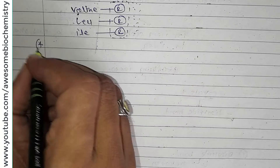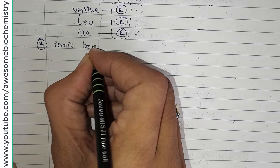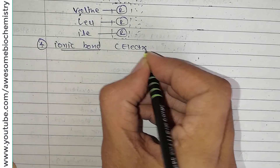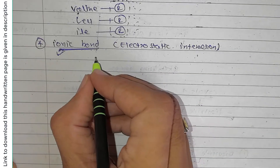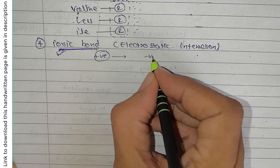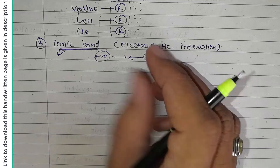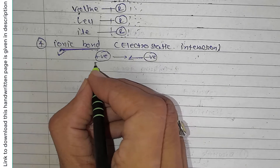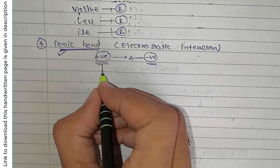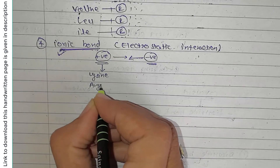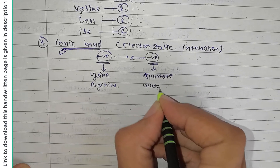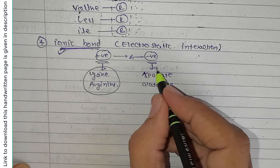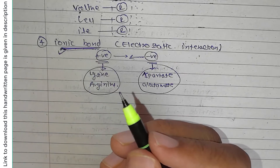The last stabilizing force is the ionic bond, also known as electrostatic interaction. Positive charges are attracted toward negative charges and vice versa. Positively charged amino acids like lysine and arginine are attracted toward negatively charged amino acids like aspartate and glutamate, resulting in the formation of ionic bonds.